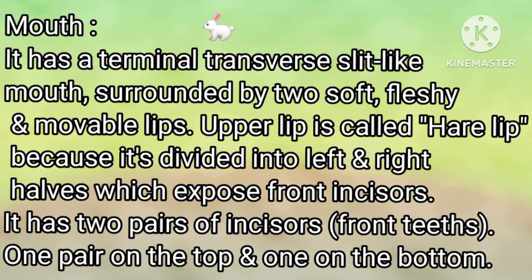Mouth: It has a terminal transverse slit-like mouth, surrounded by two soft, fleshy and movable lips. The upper lip is called hare lip because it is divided into left and right half, which exposes front incisors. It has two pairs of incisors — one pair on the top and one pair on the bottom.